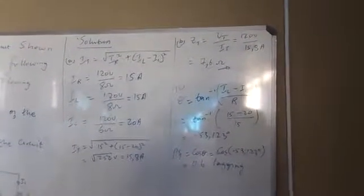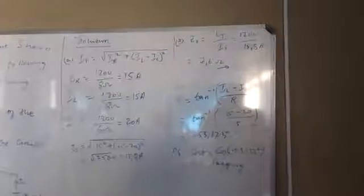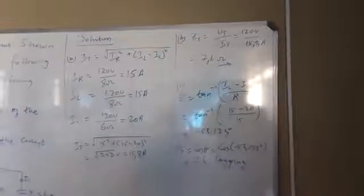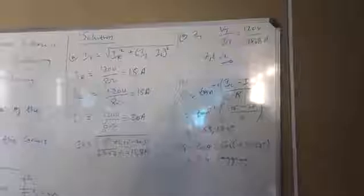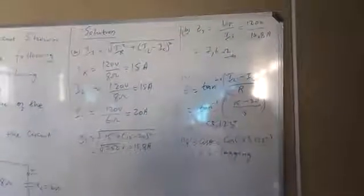Now VT is given as 120 volts, and IT we just calculated. Then the total impedance of the circuit is simply 7.6 ohm.